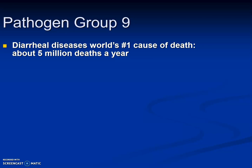Let's take a look at pathogen group number nine. We're starting with a big statement: diarrheal disease is the world's number one cause of death from infectious diseases. The estimation is about 5 million deaths per year, mostly among children who end up dying from dehydration.